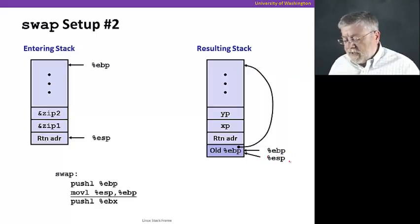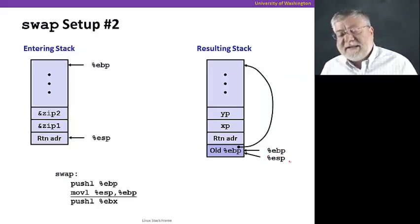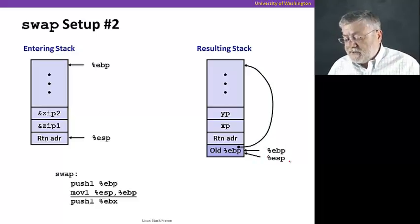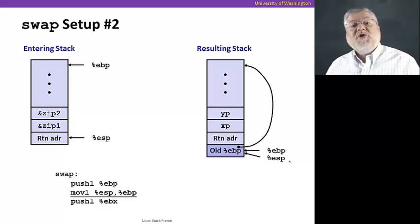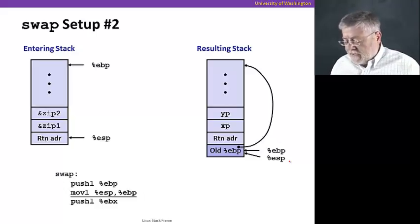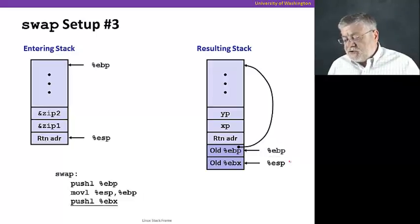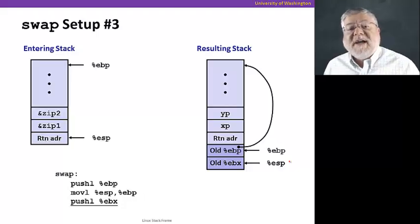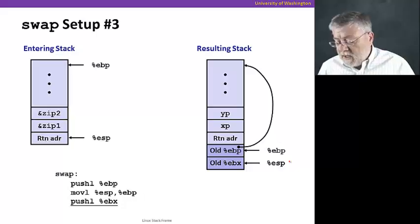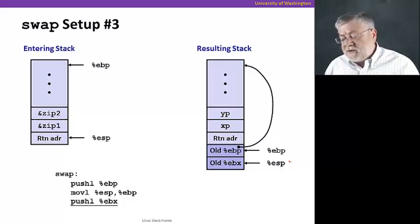The next instruction is a move instruction that takes the value of ESP and moves it to EBP. This is setting up the new base pointer for the new stack frame for the swap procedure. So, right now, both of those pointers are pointing to the same location, the top of the stack. The very next instruction pushes the value of EBX. This is maybe a register that we're going to use inside of swap. So, we're going to push that value onto the stack so we can restore EBX before we return.